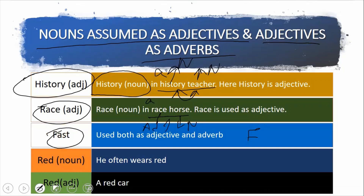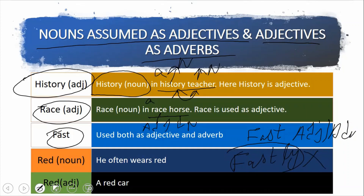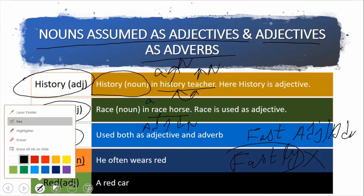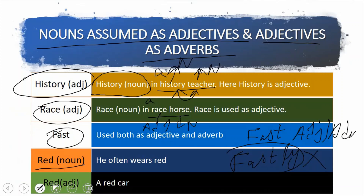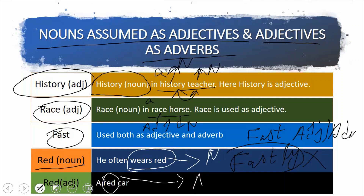Fast جو ہے وہ as an adjective بھی use ہوتا ہے اور as an adverb بھی۔ Fastly جو لفظ ہم بولتے ہیں وہ بالکل غلط ہے — there is no word like fastly۔ اسی طرح red as a noun بھی use ہوتا ہے اور as an adjective بھی — جیسے he often wears red میں red as a noun، اور a red car میں red as an adjective۔ ڈکشنری میں بھی آپ اس کے uses دیکھ سکتے ہیں۔